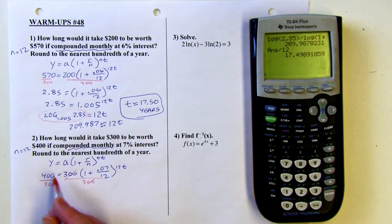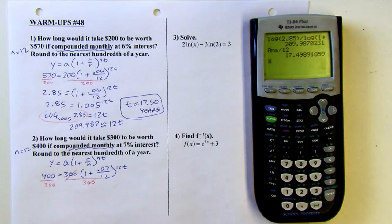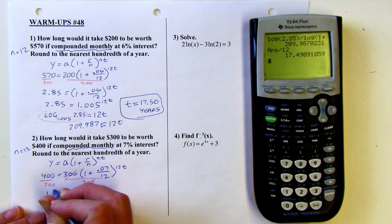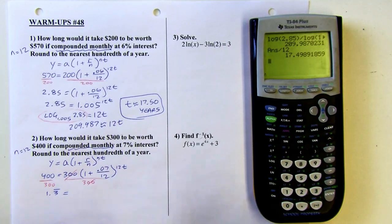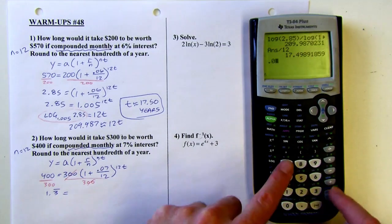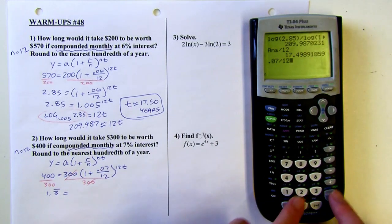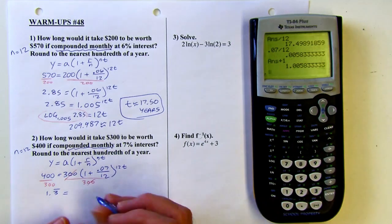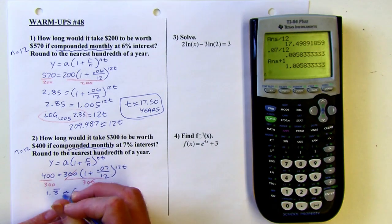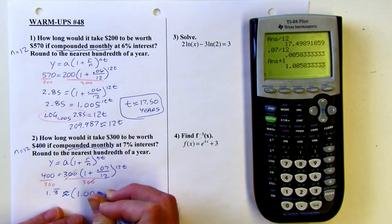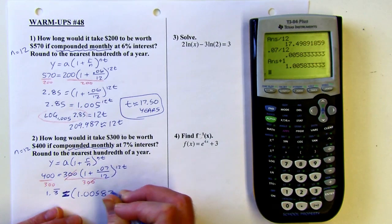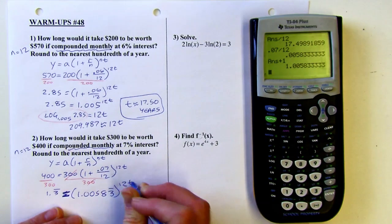Those will cancel. And then this is going to reduce to 4 thirds. So 1 and a third or 1.33, or 1.3 repeating. Maybe I'll just call it that. And then let me start simplifying the fraction here. 0.07 divided by 12. I'm going to add one to that. So I've got, this is about 1.005. Well, I'll make it exact because I've got a repeating decimal there.